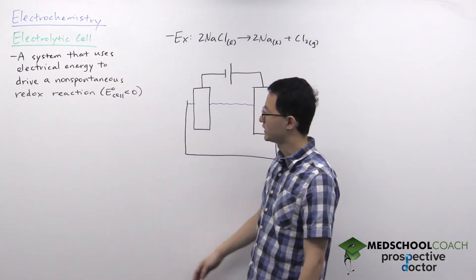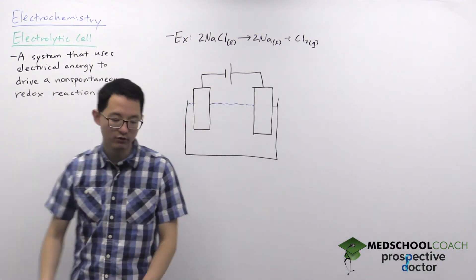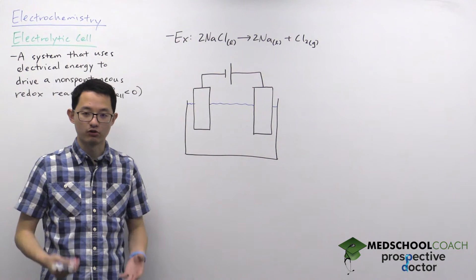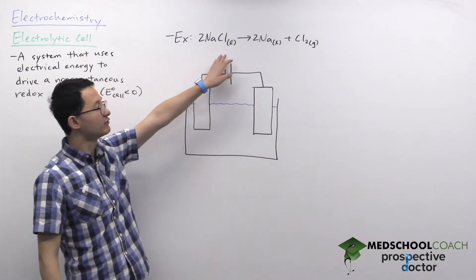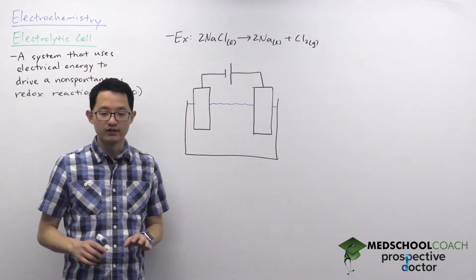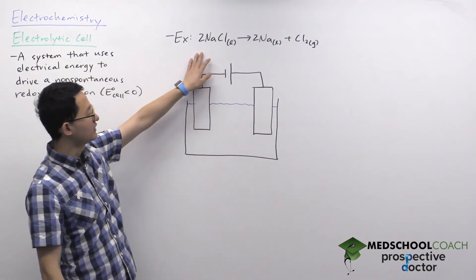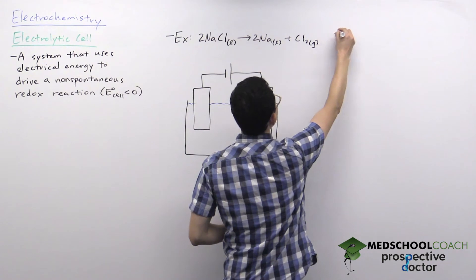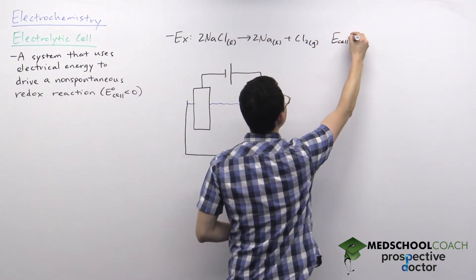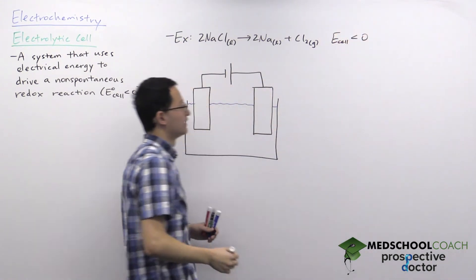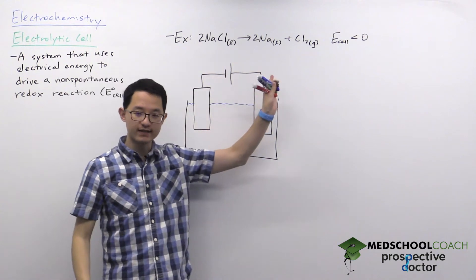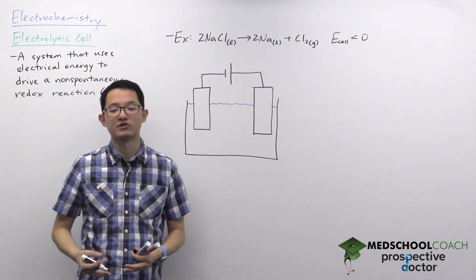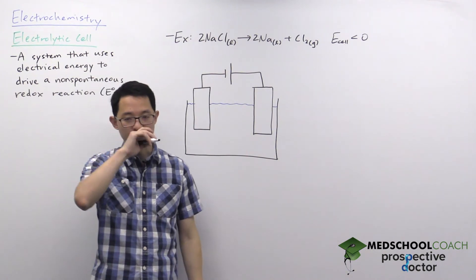Here we're going to take a look at an example: the electrolysis of molten sodium chloride — liquid sodium chloride, not aqueous. If we look at the reaction, we're going to see that the cell potential is going to be negative. That should make sense: a negative value because this is a non-spontaneous process, so we're forcing it to occur using electrical energy.